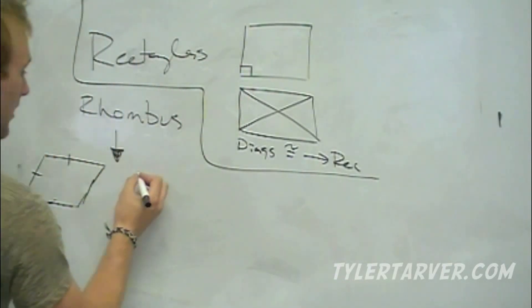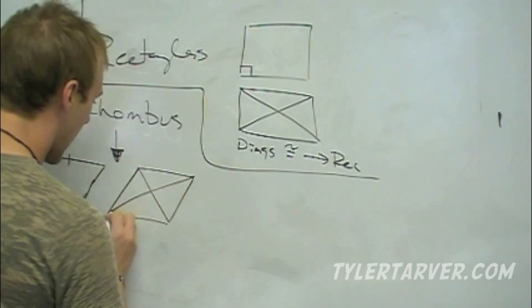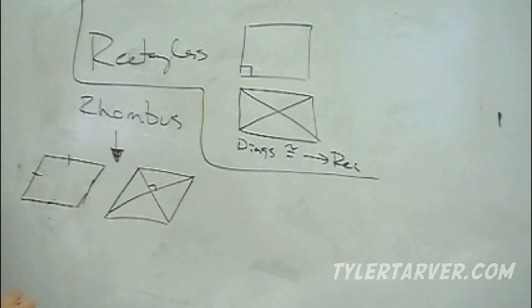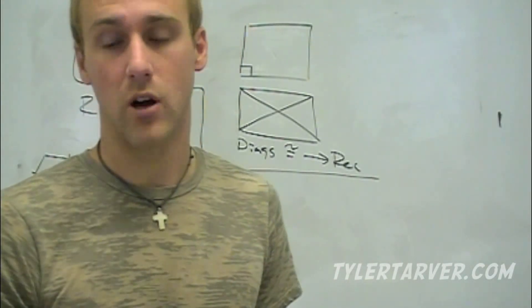Next one. In a parallelogram, if the diagonals are perpendicular, it's a rhombus. If the diagonals make a 90 degree angle, it's a rhombus.